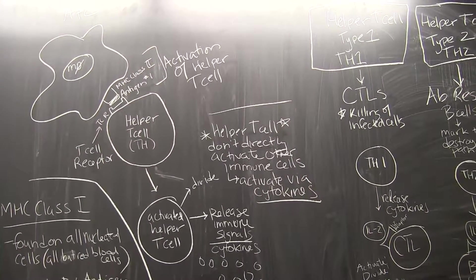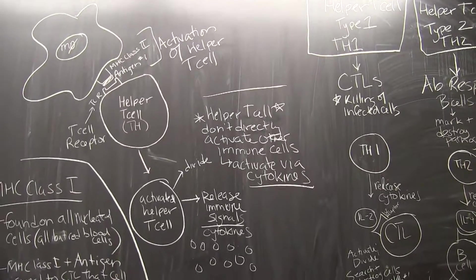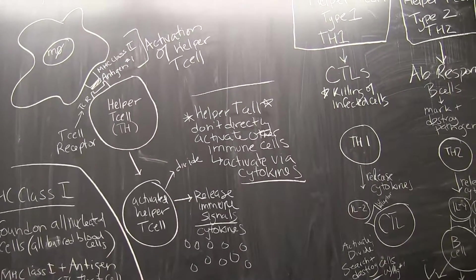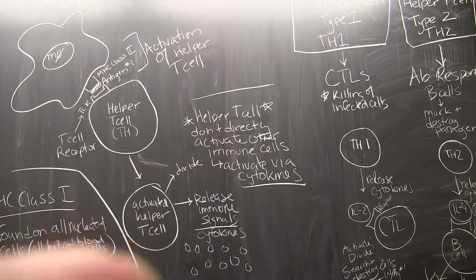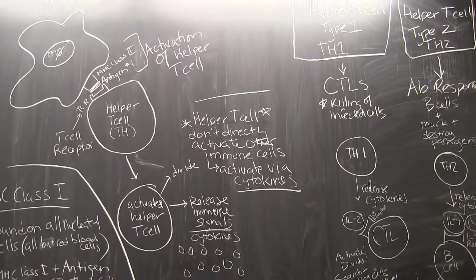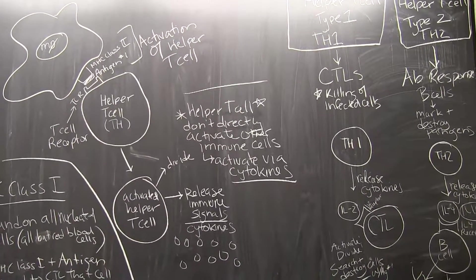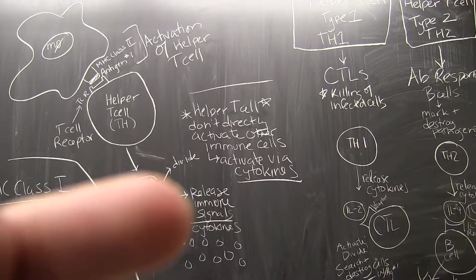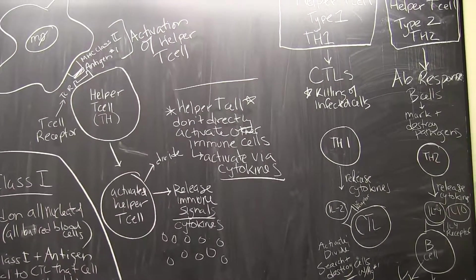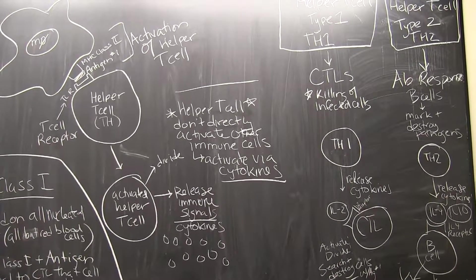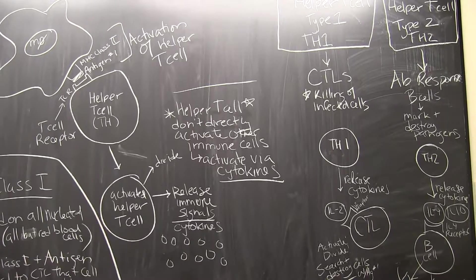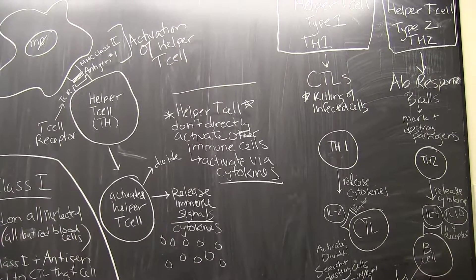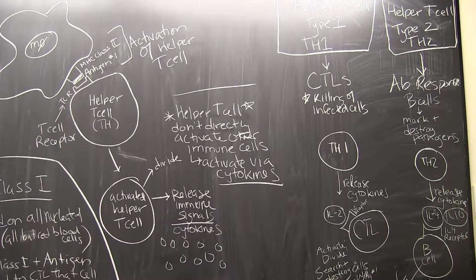It's really important to know that once these helper T cells are activated, they are signaled to divide and say hey we need more of these helper T cells. But then the big thing that happens is that they release immune signals and we call immune signals cytokines. There are lots of different kinds of cytokines they can do lots of different things depending on the conditions that they're activated in.